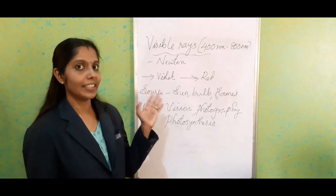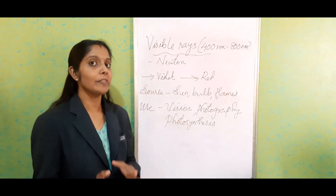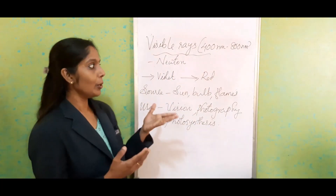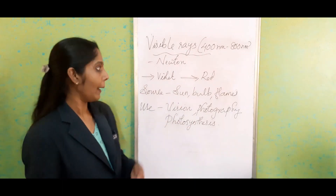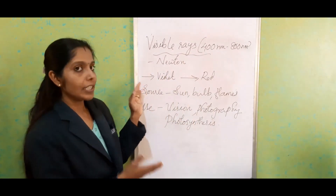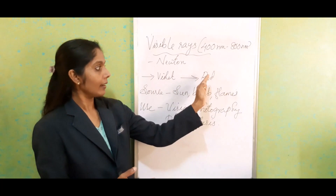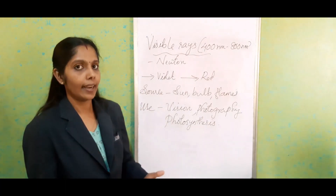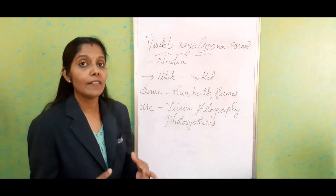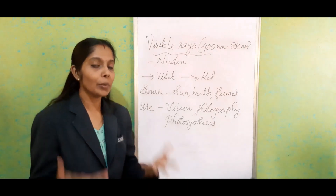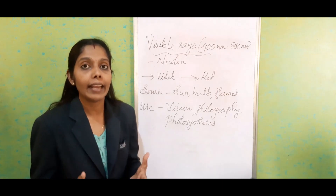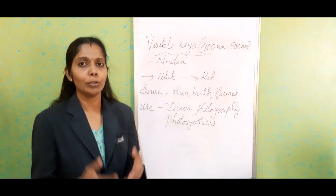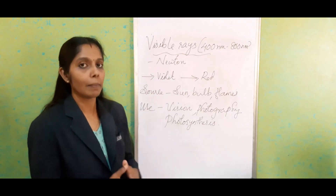After UV rays, we have visible rays — very familiar to everyone. We saw the different spectrum of colors in the last class. The wavelength ranges from 400 nanometer to 800 nanometer, discovered by Sir Isaac Newton. It starts from the violet end at 400 nanometer to the red end at 800 nanometer. The ultimate source is the sun, and also electric bulbs, torchlight, and flames. The main use is that it gives vision to the entire animal kingdom — without visible light, we cannot see anything.